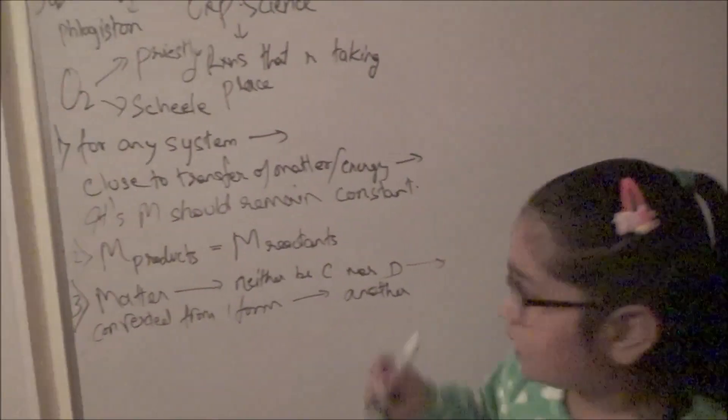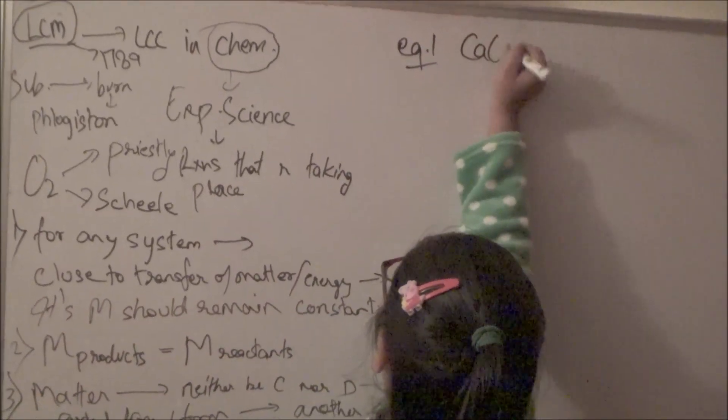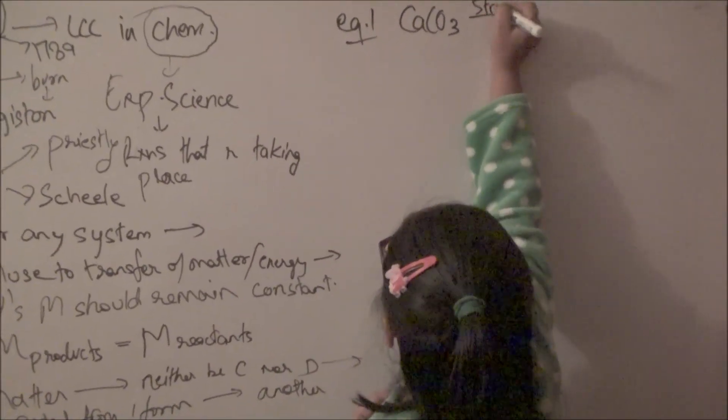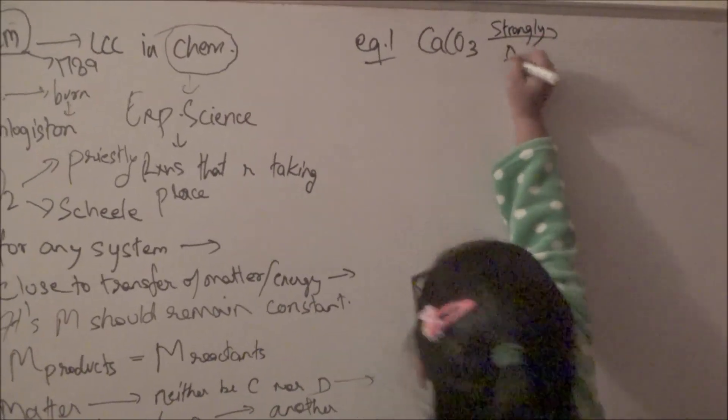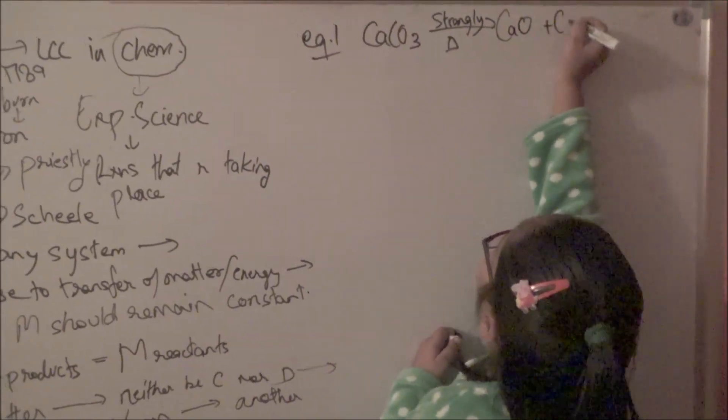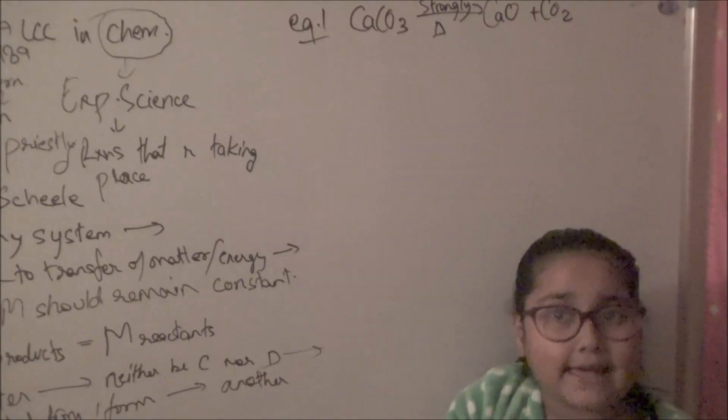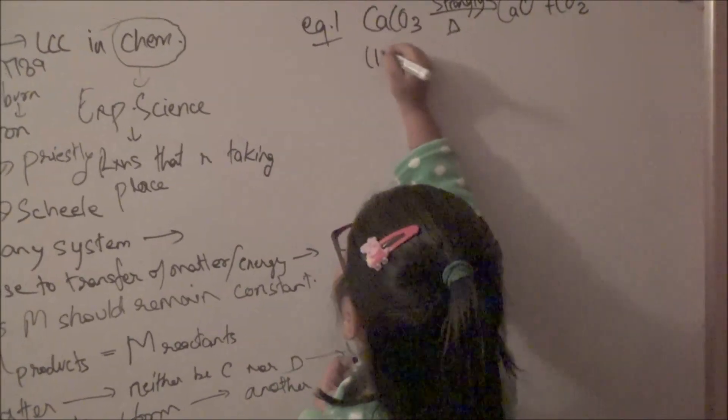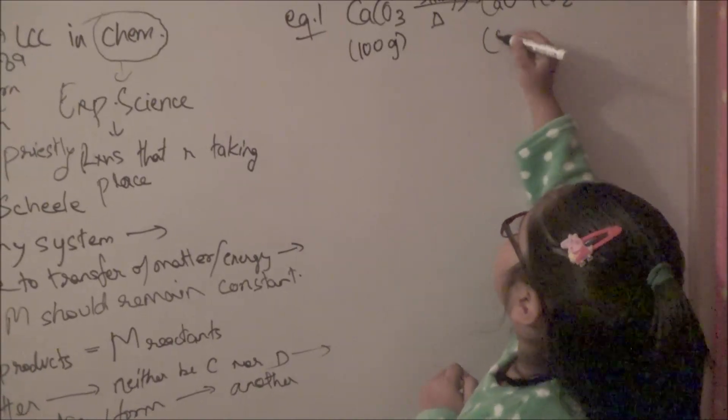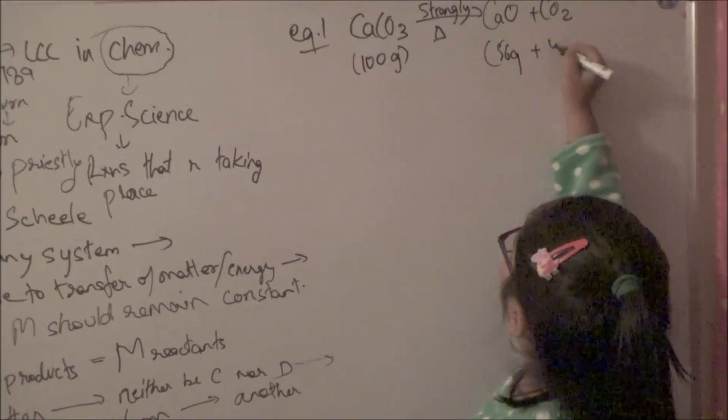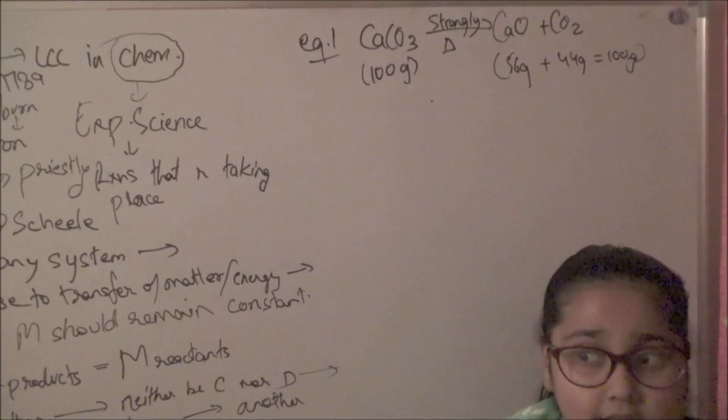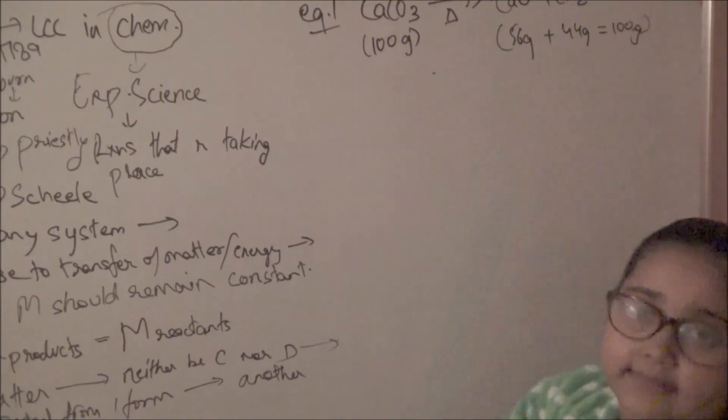Let us take some examples. The first example: calcium carbonate. When calcium carbonate is heated, it gives calcium oxide plus carbon dioxide. If we add calcium carbonate 100g, calcium oxide is 56g produced, carbon dioxide is 44g produced. If we add them, it is 100g of calcium carbonate. So law of conservation of mass is obeyed in this case.